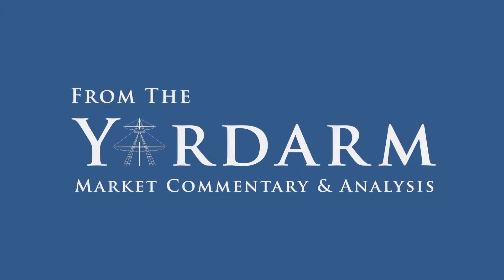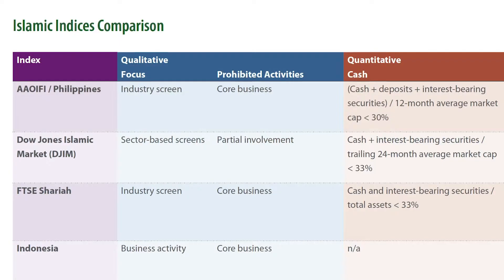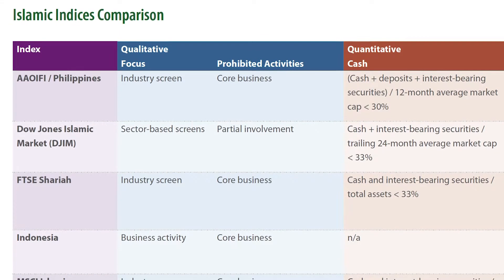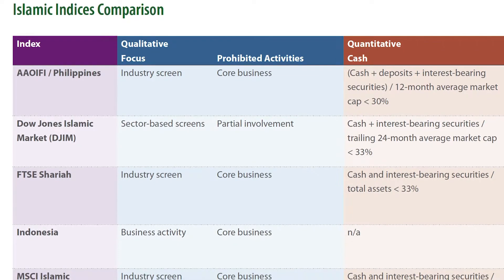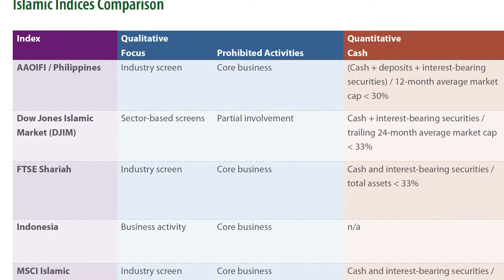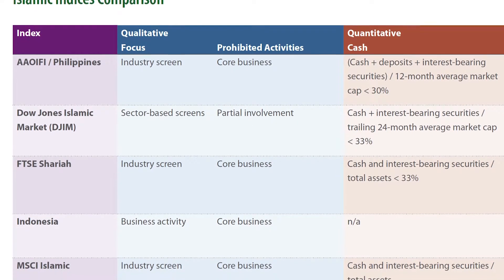What we're doing is looking at all the different Islamic screens that are out there in the world. We want to highlight and give an overview of what the screens are, how they've come about, and what the evolutionary process was. There's a matrix in the piece that talks about what the different screens are, so you can begin to compare and contrast.